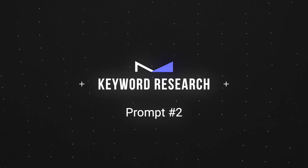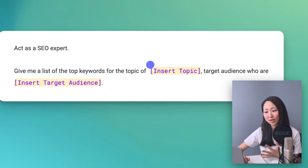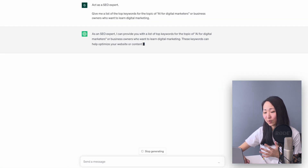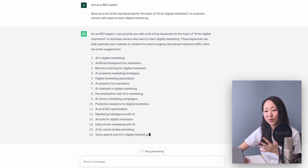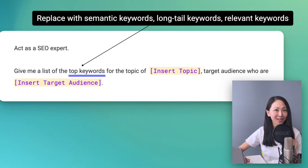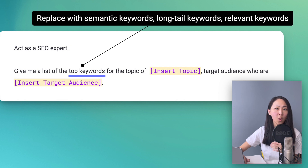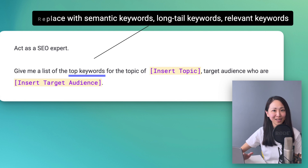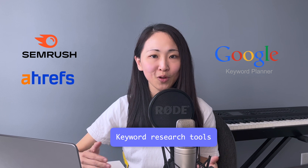Prompt number two: keyword research. As a digital marketer, you'll come across a lot of keyword research. The good news is ChatGPT can give you tons of keyword ideas to start with. Just include a key topic and a target audience, and with a simple command you can instantly get a handy list of keywords. You can also adjust it to get semantic keywords, long-tail keywords, or relevant keywords to further expand the list. Currently ChatGPT won't be able to give you search volume data, so I'd recommend putting these keywords back into your keyword research tool to identify the potential for each one.